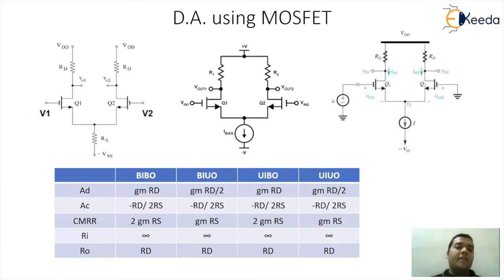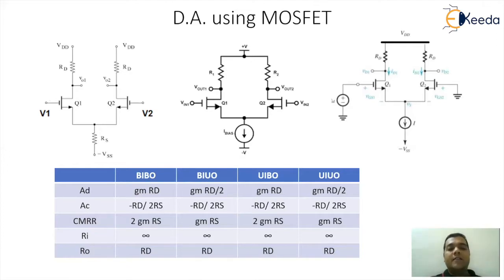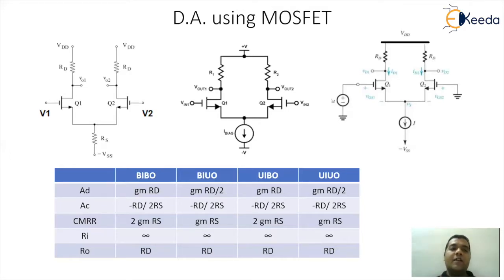Observing the table carefully, similar to BJT: whenever we go for an unbalanced configuration the differential gain goes to half the original balanced value. The common mode gain remains the same in all four cases. For CMRR, whenever we go for unbalanced output, the CMRR reduces to half. Since we are using MOSFET circuitry, input resistance is infinity and output resistance equals RD.